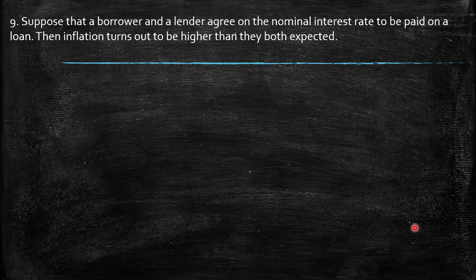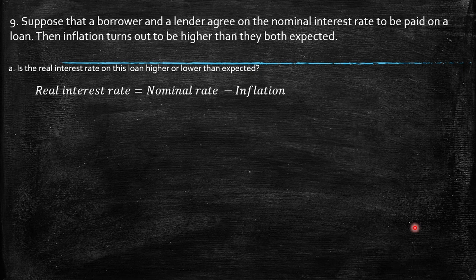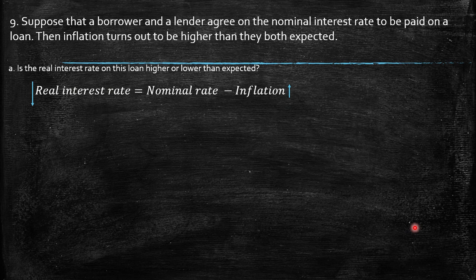Question 9: Suppose a borrower and a lender agree on the nominal interest rate to be paid on a loan, and inflation turns out to be higher than both expected. Is the real interest rate on this loan higher or lower than expected? We saw that the real interest rate equals the nominal rate minus inflation. If inflation is higher than the nominal rate, you face negative real interest rates. If the nominal rate is higher than inflation, the real interest rate is positive. In this case, inflation was higher than expected, so keeping the nominal rate constant, we are facing a lower real interest rate — even negative if inflation exceeds the nominal rate.